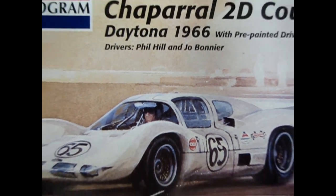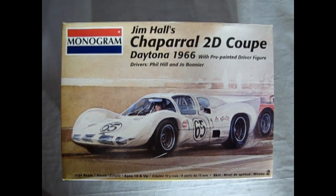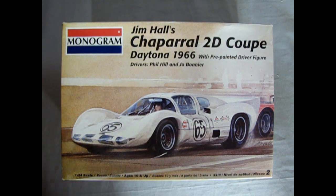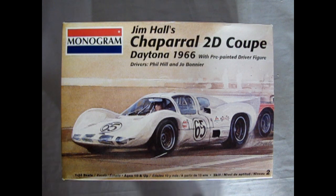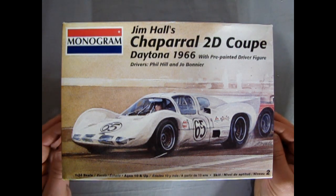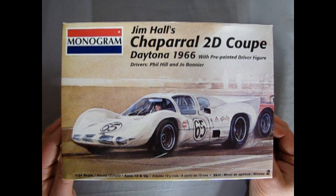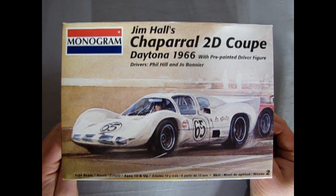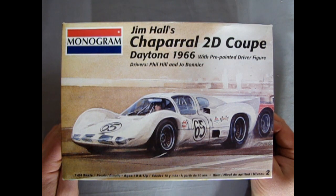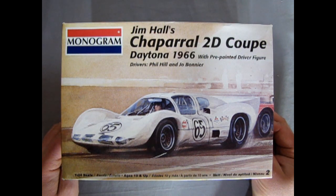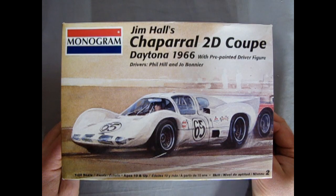Hello once again race fans and welcome back to the 1966 Daytona. Today we're going to be looking at Jim Hall's Chaparral 2D Coupe with pre-painted driver figure. The drivers for this car were Phil Hill and Joe Bonnier. Now this is a really cool kit. It was originally introduced in 1966 during the height of slot car racing so it does have some details in it. It also has some very interesting blank areas where you could put in your own brass frame and of course a slot car engine if you were able to kit bash.